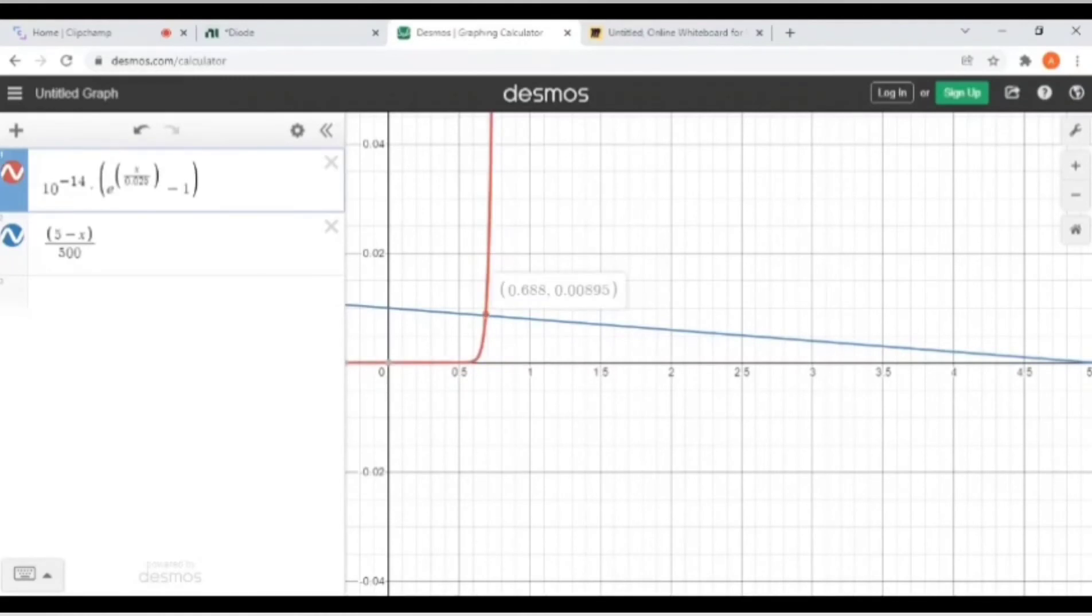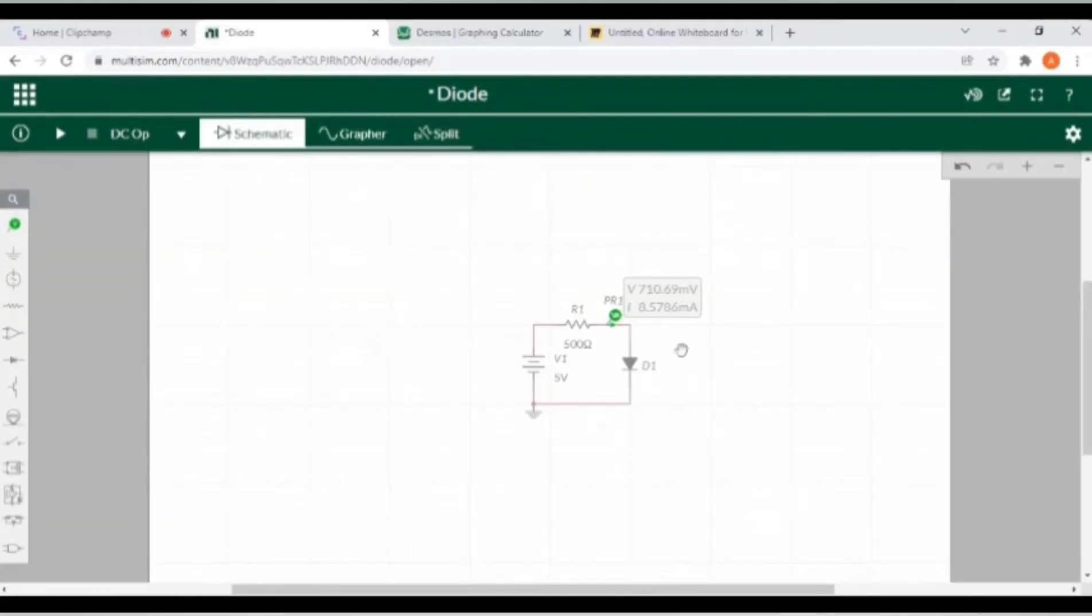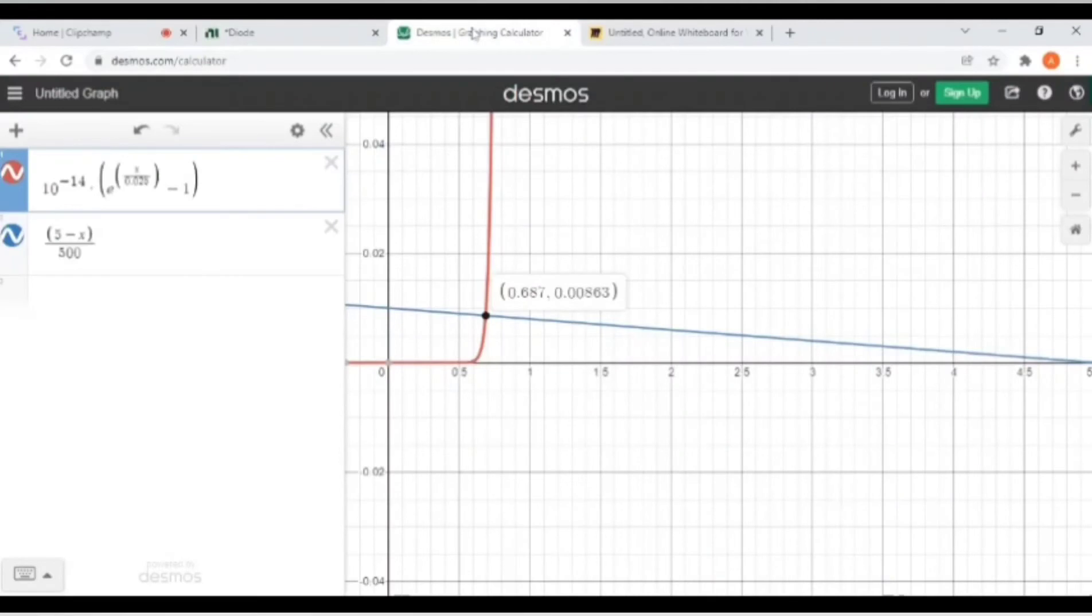You can see the values are approximately equal to each other from the simulated values and the values obtained from graphical method. This is the graphical method: 0.687 or 687 millivolts. The current value is 8.57 milliampere. And here the current value is almost same, that is 8.57 milliampere or 0.085.